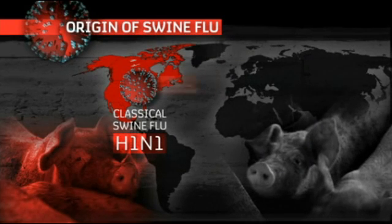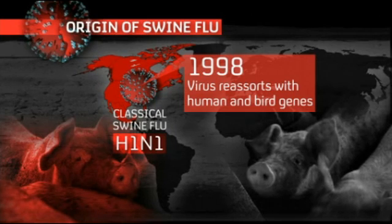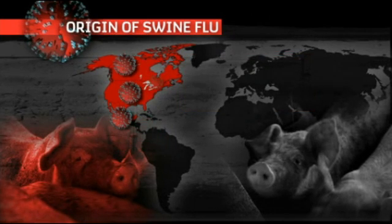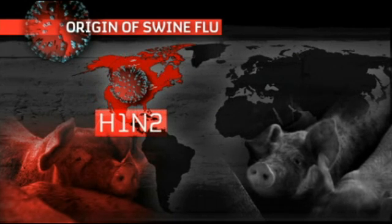But in 1998 it suddenly mixed — reassorted — to get genes from human and bird flu viruses too. The number of strains exploded, the bird flu genes making the virus able to spread much faster.